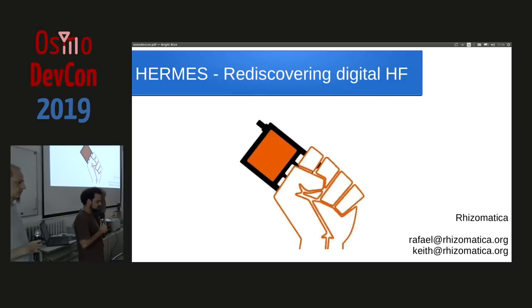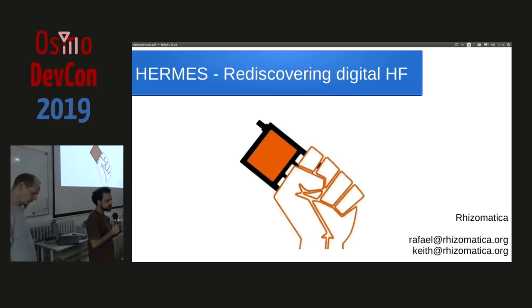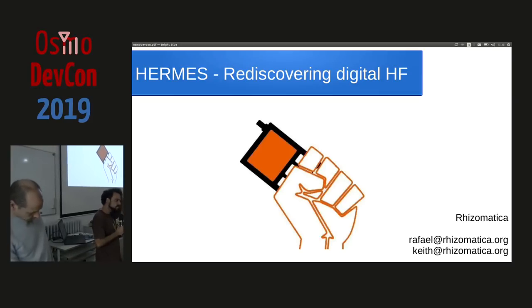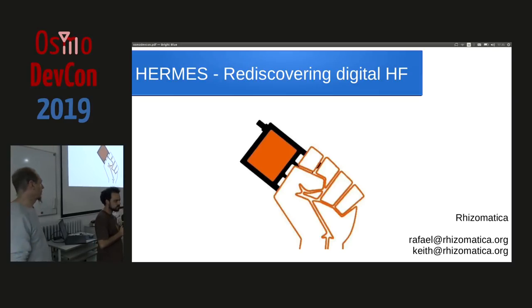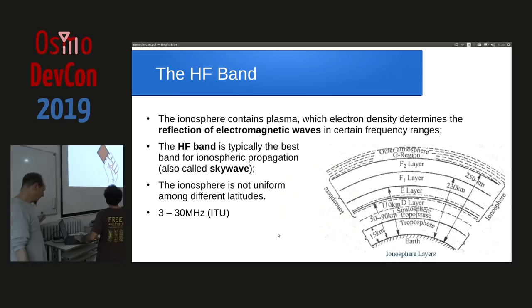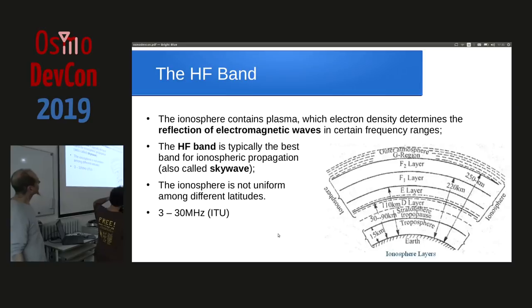How to use HF as backhaul for communities in very isolated places, like Amazon Forest or Central Africa, things like this. First, why the HF band?